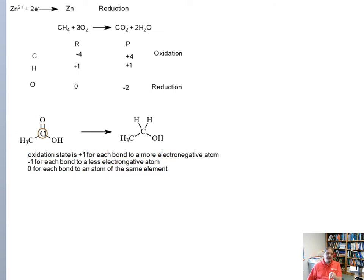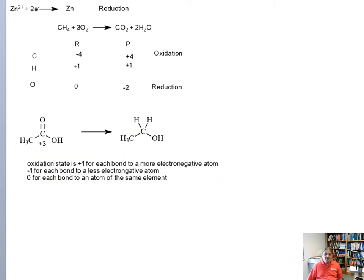So that means that we can calculate the oxidation state of this carbon atom here. We have three bonds to oxygen, one bond to carbon, so three bonds to oxygen is plus three. The bond to carbon has no impact. Over here on this structure, I have a bond to carbon, two bonds to hydrogen, and one bond to oxygen. So it's plus one for the bond to oxygen, but it's minus one for each bond to hydrogen, which is minus one overall, and this is a reduction.